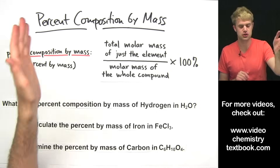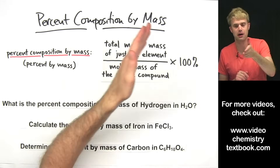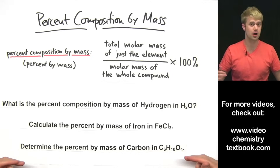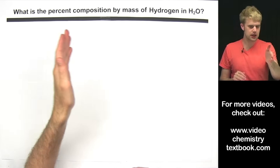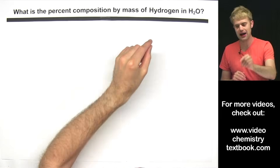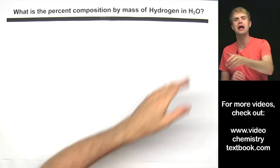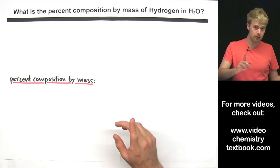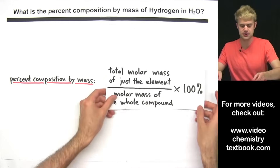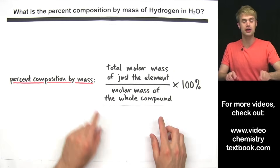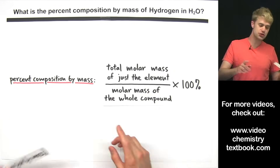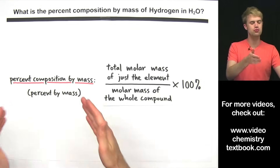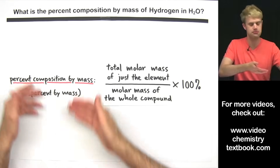Here we're going to learn how to calculate percent composition by mass and we'll work through some practice problems. The first question is: what is the percent composition by mass of hydrogen in H₂O? Sometimes percent composition by mass is referred to simply as percent by mass — they're the same thing.